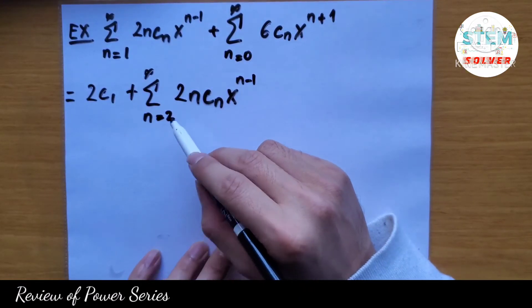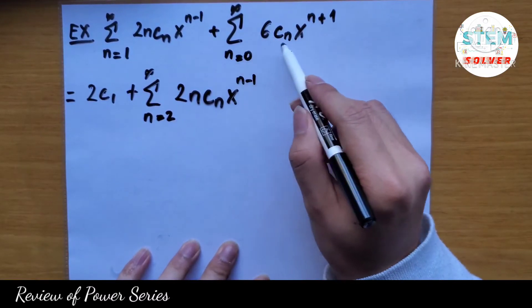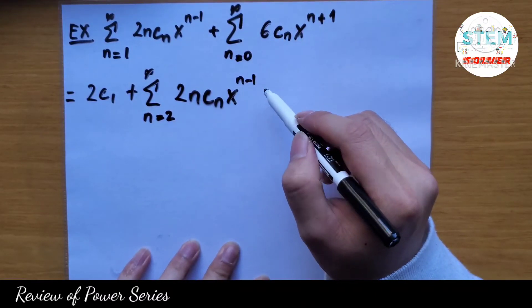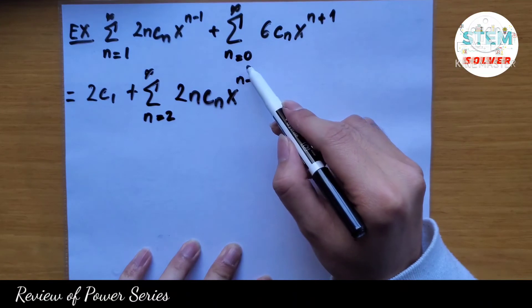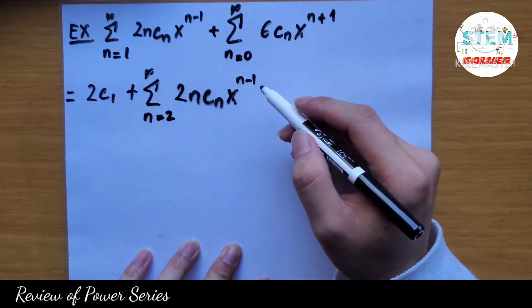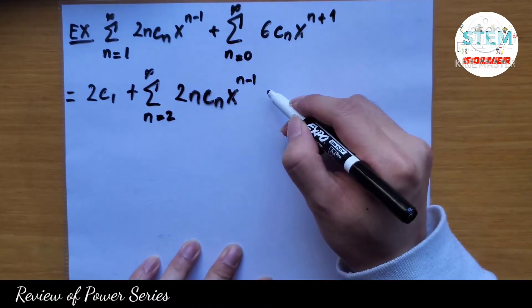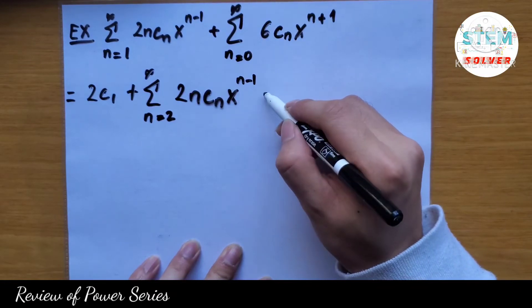Okay, now you're going to rewrite this, but first take a look. I have n equal 2 for this series and n equal 0 for this one, so I'm gonna re-index at this point to save time.